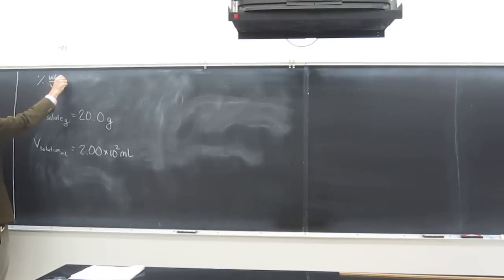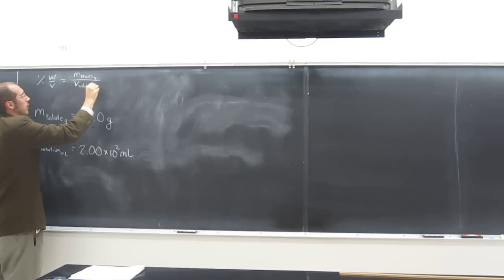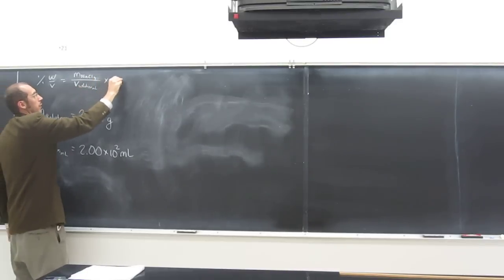Remember we said the equation is the percent weight volume. So it's going to be the mass of sodium chloride in grams, which we've got, over the volume of the solution in milliliters, times 100.